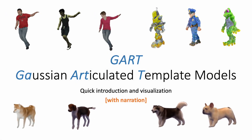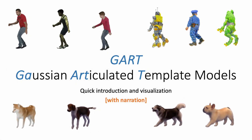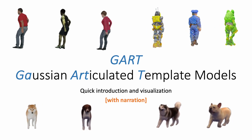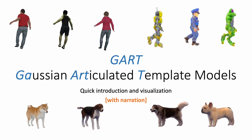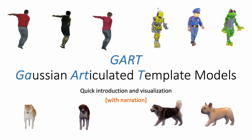We present GART, Gaussian Articulated Template Models, an explicit, efficient, and expressive representation for articulated subject capturing and rendering from monocular videos.